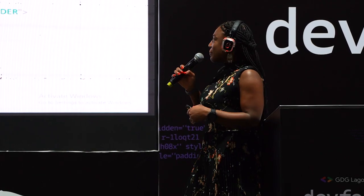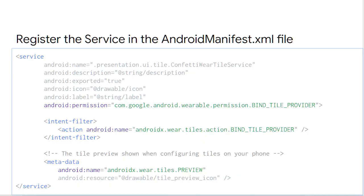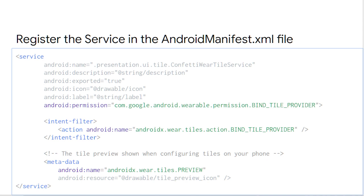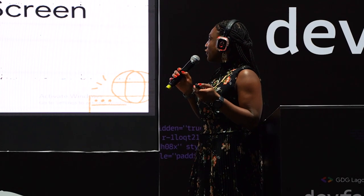After creating your tile and extending SuspendingTileService and implementing its methods, you need to register the service in your AndroidManifest.xml file. Similar to broadcast receivers, you need the name, description, exported flag, and an optional icon, but the most important things are the permissions, the intent filter, and the metadata.